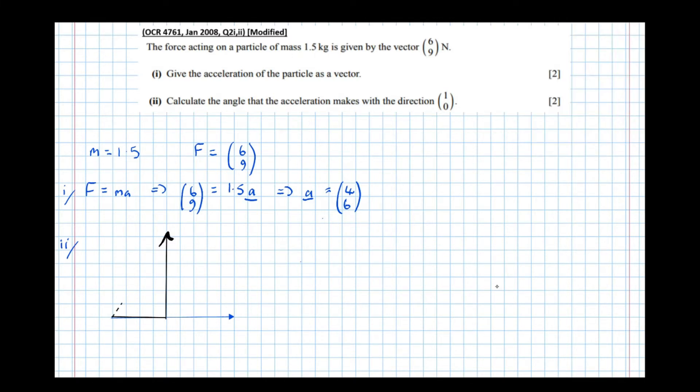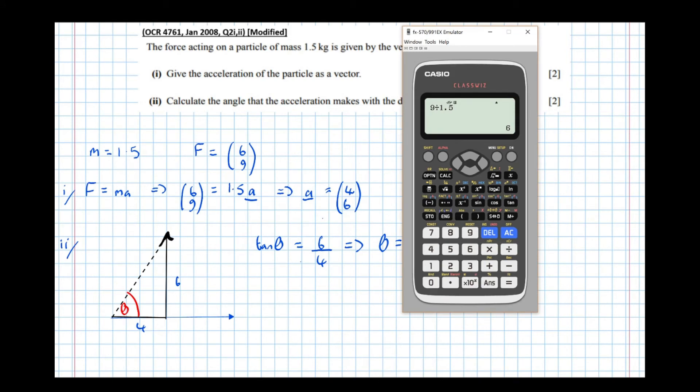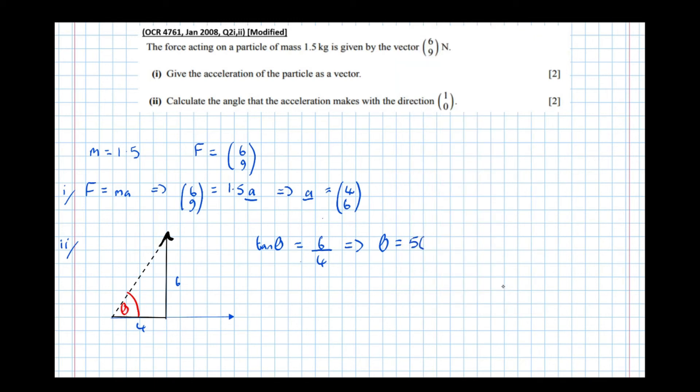So the angle we're talking about is the angle made between the resultant and the vector that we've just drawn, so it's this angle here, let's call it theta. So (4, 6), we've got tan theta equals the opposite over the adjacent, which means that theta equals the arctan of 6 quarters. So arctan of 6 quarters, which is equal to 56.3 degrees, and that's the question finished.